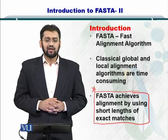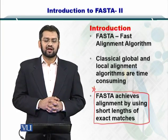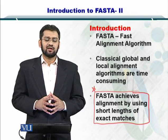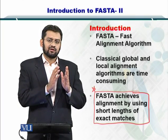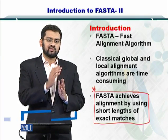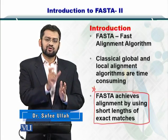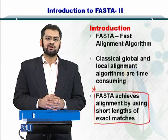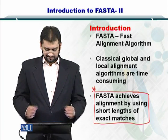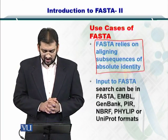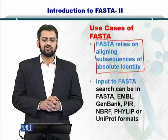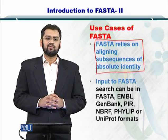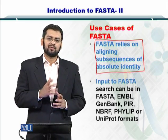FASTA achieves alignment by using short lengths of exact matches. An exact match means a hundred percent similar sequence between the database and your query. Short sequences of such matches are collected and then an alignment procedure is performed on the resulting comparisons. FASTA relies on aligning these subsequences of a hundred percent similarity, which biases the algorithm towards these matches and therefore speeds up the search.